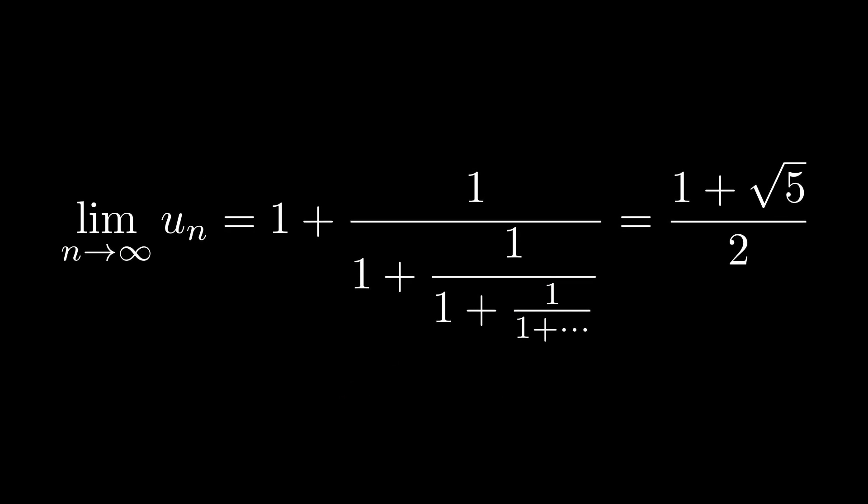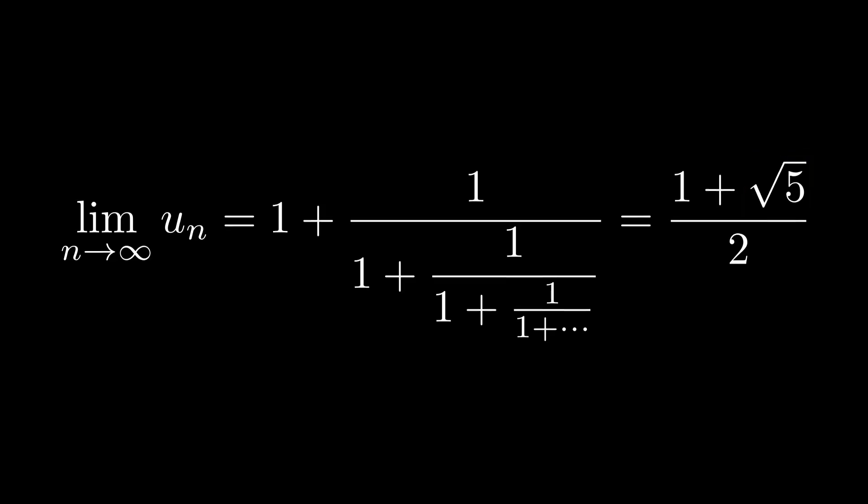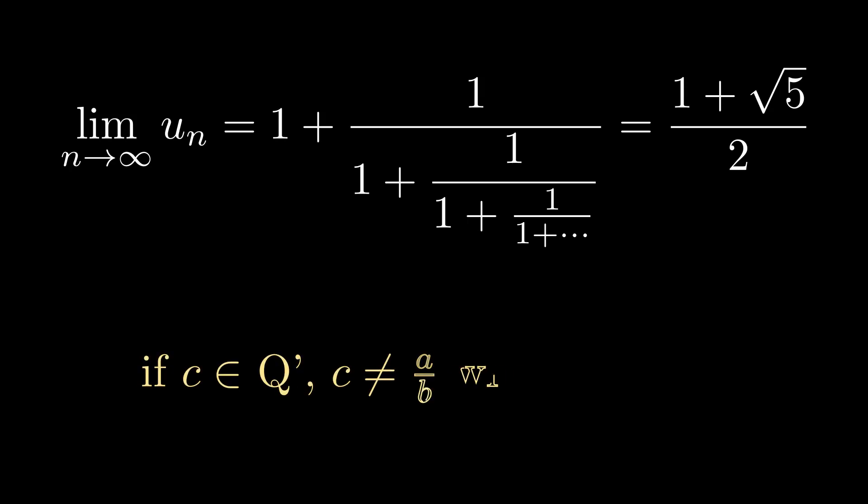The next thing to notice is that the solution is irrational, yet none of the numbers in the fraction are irrational. If we have a number c which is irrational, then c cannot be written in the form a over b, where a and b are integers, or in more normal words, the square root of 5 can't be written as a fraction, by definition.